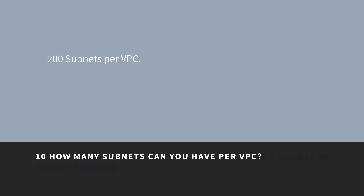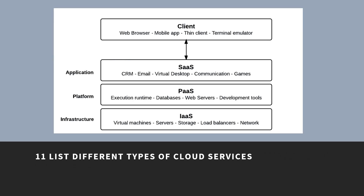How many subnets can you have per VPC? You can have 200 subnets per VPC. List different types of cloud services. Different types of cloud services are: Software as a Service (SaaS), Data as a Service (DaaS), Platform as a Service (PaaS), and Infrastructure as a Service (IaaS).